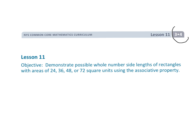Alright, this is Grade 3, Module 4, Lesson 11, and in this lesson the objective is to demonstrate possible whole number side lengths of rectangles with areas of 24, 36, 48, or 72 square units using the associative property.